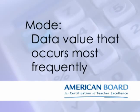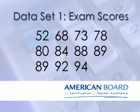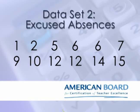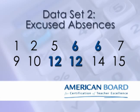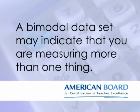A third measure of central tendency is the mode. The mode is the data value that occurs most often in the data set. Looking again at the set of exam scores, two of the exam scores are 89, which means the mode of that data set is 89. Now the excused absence data set is a different animal altogether. You could describe this data set as bimodal, because there are actually two modes. Two students had 12 excused absences and two students had 6 excused absences. When you've got a bimodal data set, it could mean that you're measuring two different things. It might be helpful to examine a histogram, or a bar chart, of this data.